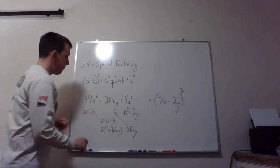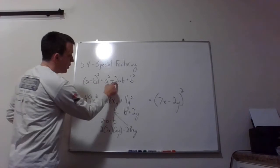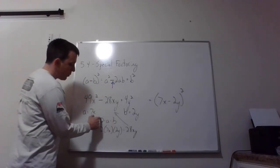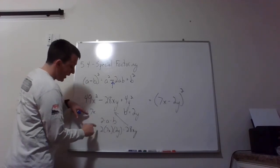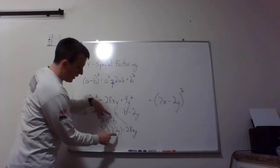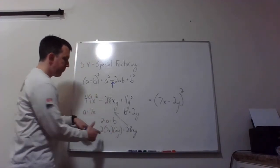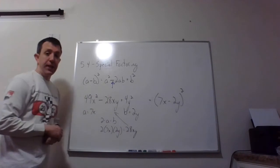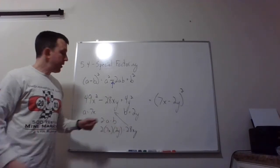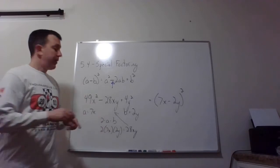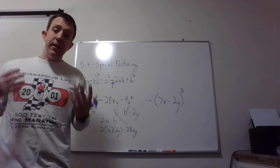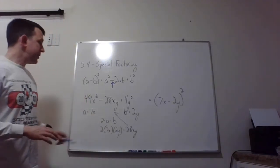And now we have to just check the middle real quick and make sure it works because we do have this extra 2, just like with the last one. So we have to check what 2 times a times b is. So I am checking the extra 2 times my a, which is 7x, times my b, which is 2y. And if I multiply all that out I do get 28xy. 2 times 7 is 14, times 2 is 28. So it works.